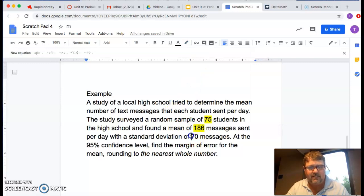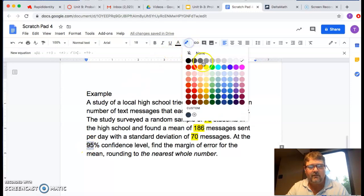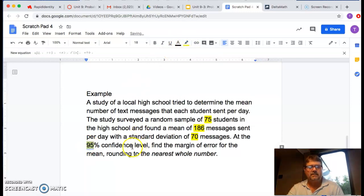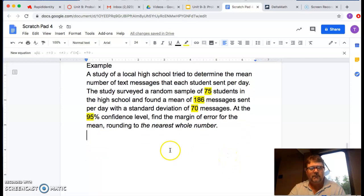Standard deviation. There's S. Alright, so they're giving me all this information. And there's your z-star. Go to your table. And I think you'll find 1.96 corresponds to the 95% confidence level.